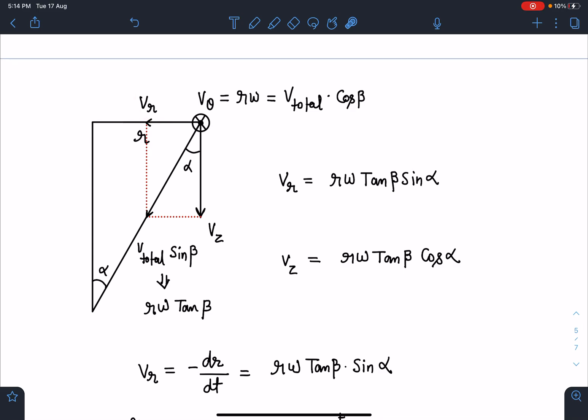V_total sin β I can write as rω tan β using the previous equation. Now V_R is rω tan β sin α, and V_Z is rω tan β cos α. All right, now V_R is pointing towards the axis and r is decreasing.